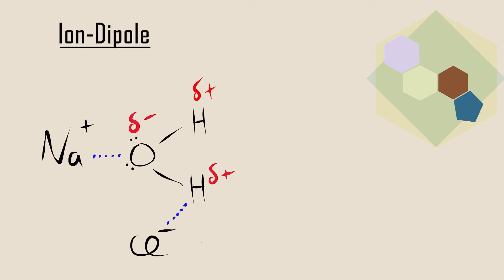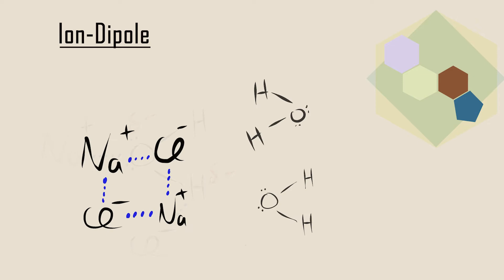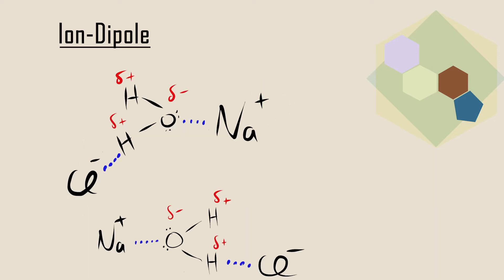The first intermolecular force we will look at is called ion-dipole forces. When an ion and a nearby polar molecule attract one another, an ion-dipole force results. Sodium chloride dissolving in water is a typical example of an ion-dipole interaction. The ions become separated because the attraction between the ions and the oppositely charged poles of the H2O molecules overcome the attraction between the ions themselves.